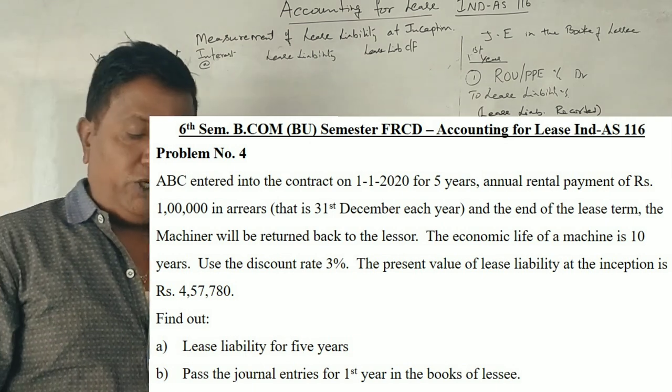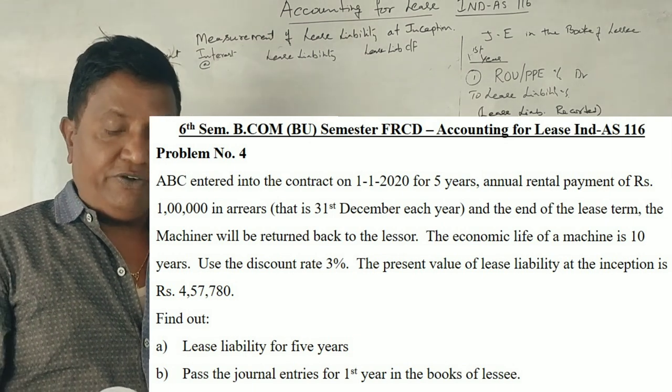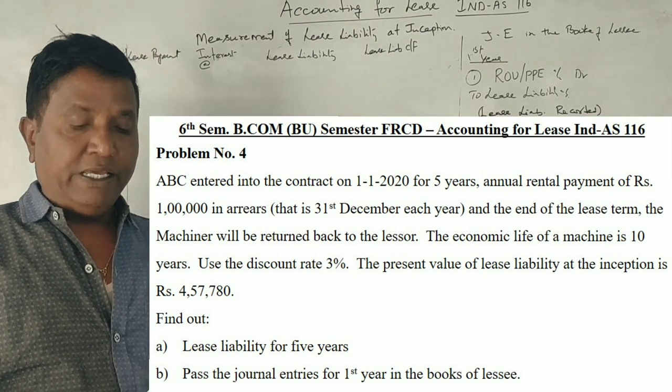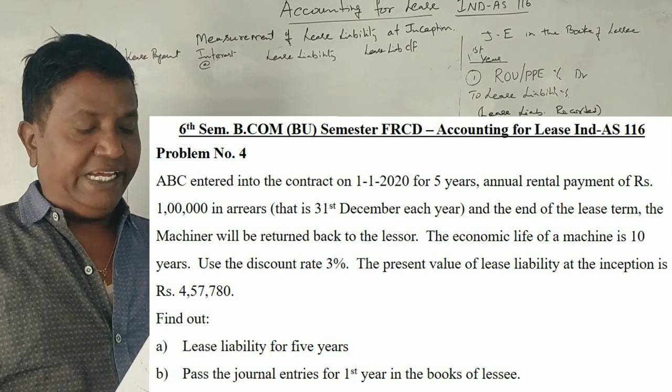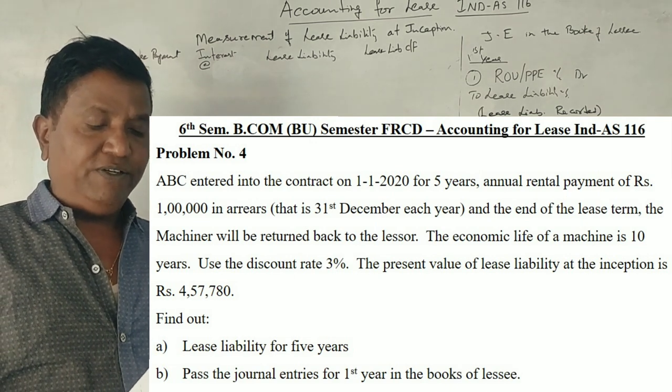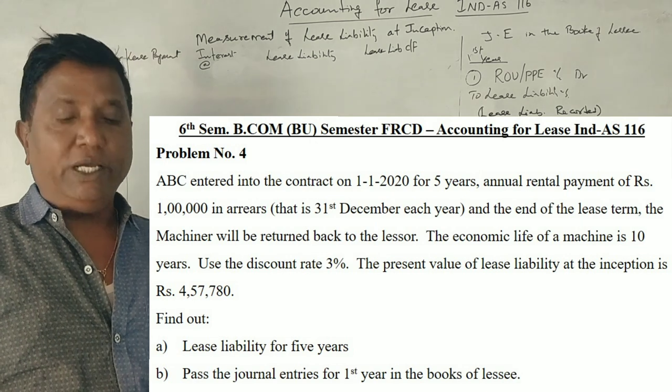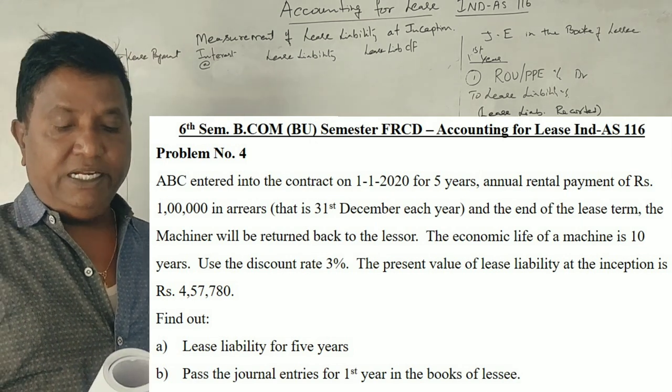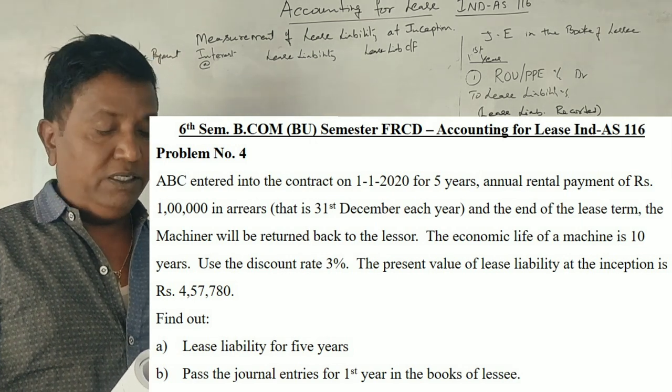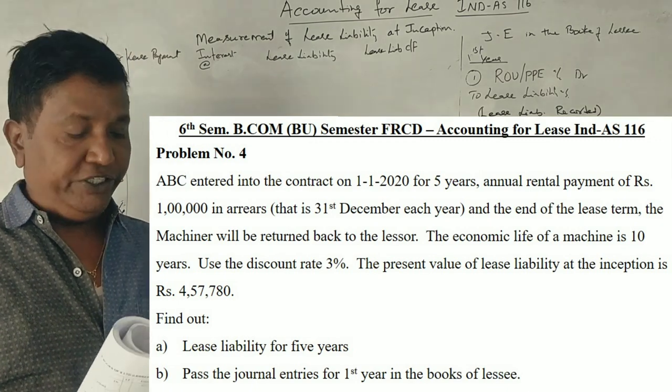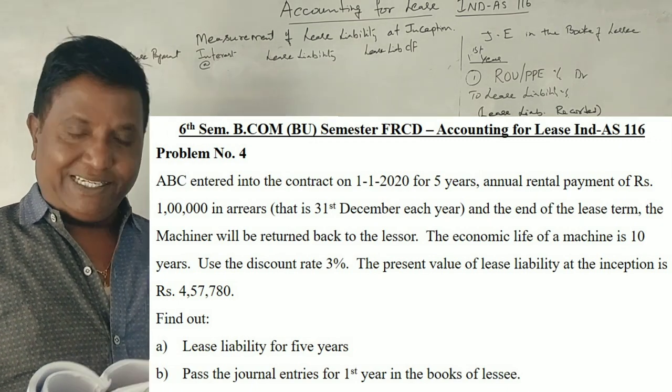ABC entered into a contract on 1st of January 2020 for 5 years. Annual rental payment is 1 lakh in arrears, that is on 31st of December each year. At the end of the lease term, the machinery will be returned back to the lessor.